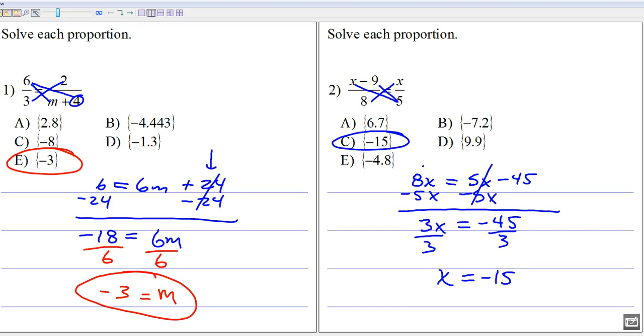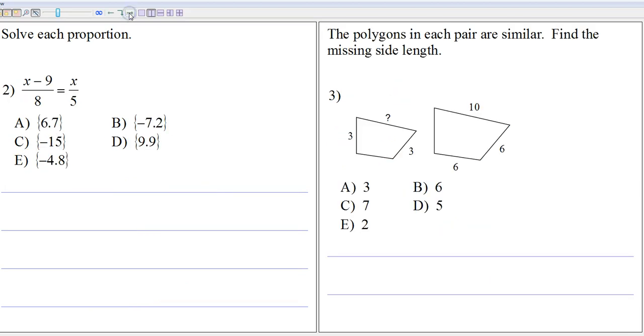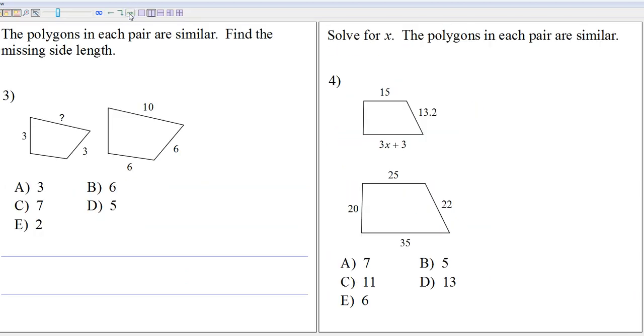So those are the mechanics. That's basically what we've got to do in all these problems. But that's the algebra mechanics once you get it set up properly. Alright. Moving right along. Number 3 and number 4. The polygons in each pair are similar. Okay, that means the sides are in proportion. So I should be able to set up one of those little fraction equals a fraction type of thing. Find the missing side length.